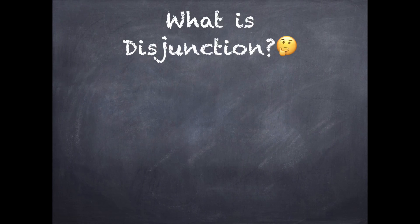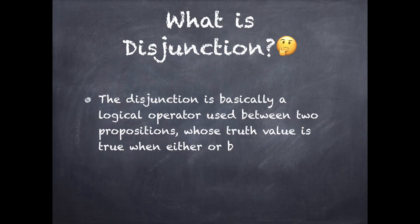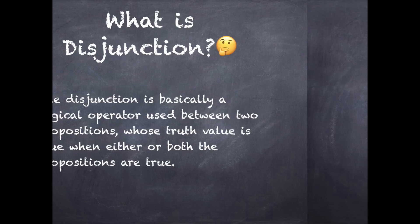What is disjunction? The disjunction is basically a logical operator used between two propositions whose truth value is true when either or both the propositions are true.